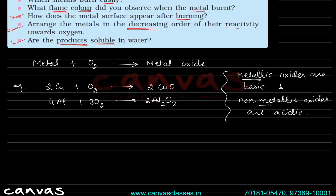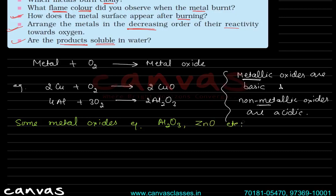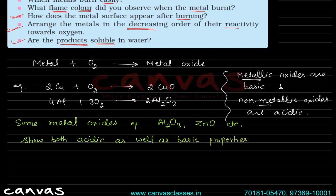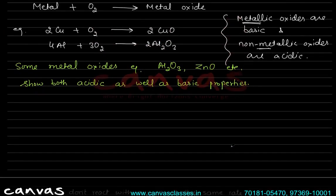Some oxides show both acidic and basic properties — for example, Al₂O₃ (aluminum oxide). This is a new point: some metal oxides, such as Al₂O₃ and zinc oxide (ZnO), show both acidic as well as basic properties.